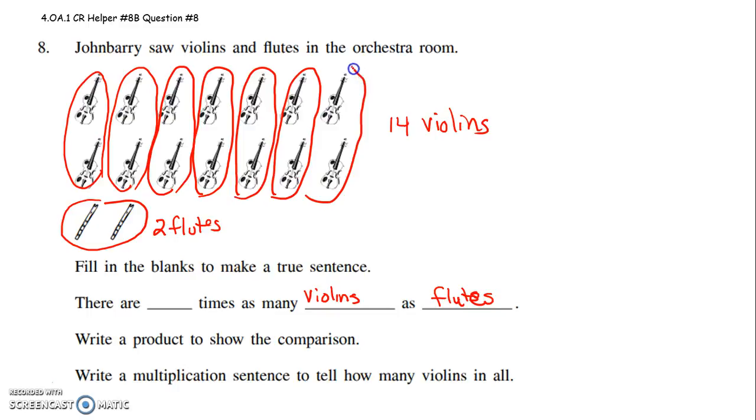So there must be 7 times as many violins as flutes. Because if we take the number of violins and divide it by the number of flutes, we'll see there's 7 times as many violins as flutes.